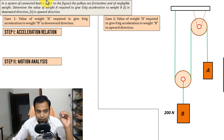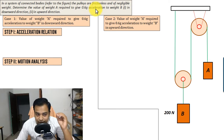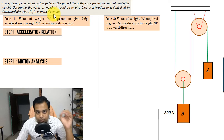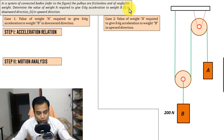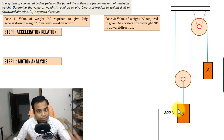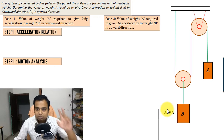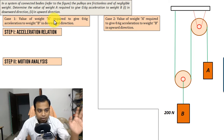So what are we supposed to do? Determine the value of weight A required to give 0.6g acceleration to weight B in the downward direction, and in the upward direction. So essentially we need to find what weight A should be so that B has an acceleration of 0.6g downward — that's case 1 — and what weight A should be so that B has an acceleration of 0.6g upward — that's case 2.